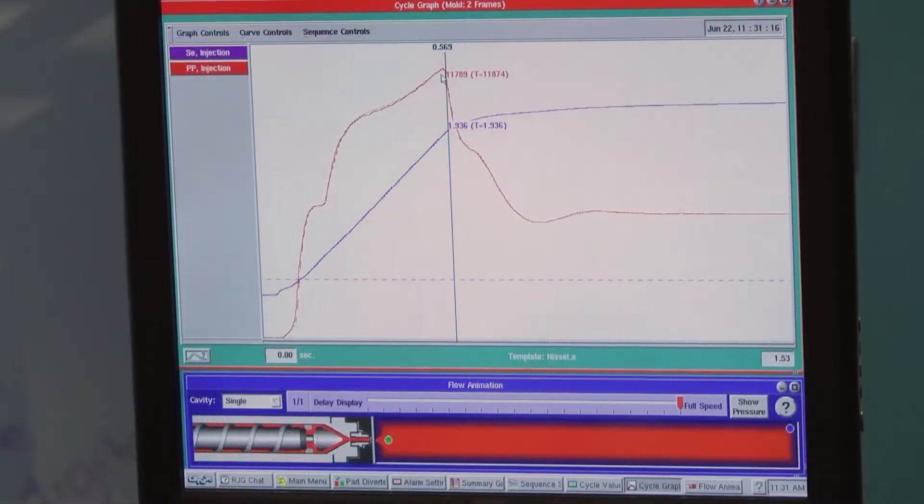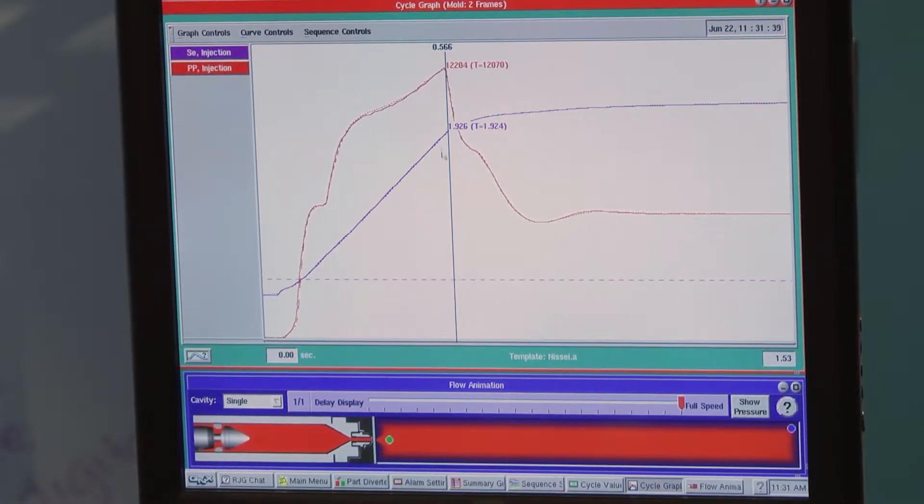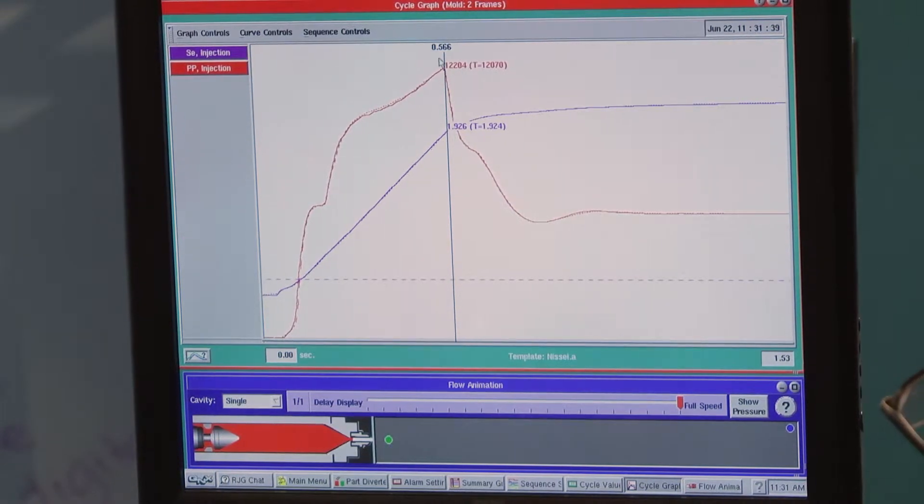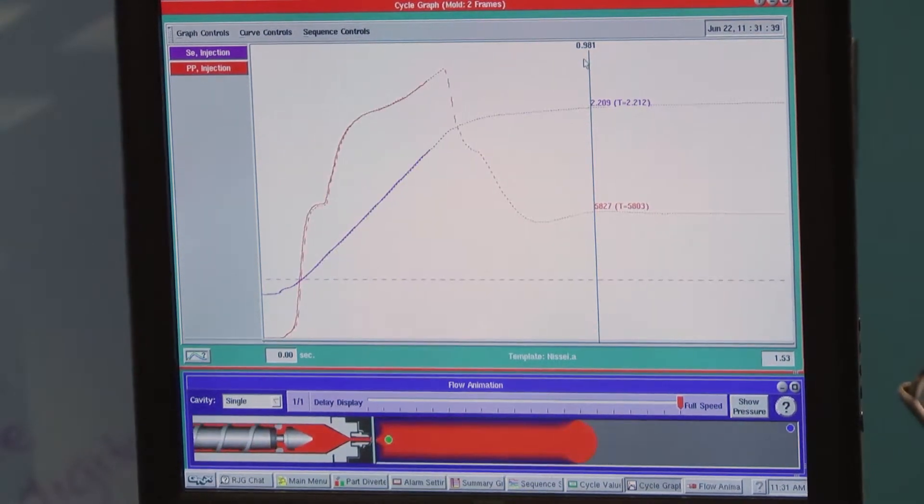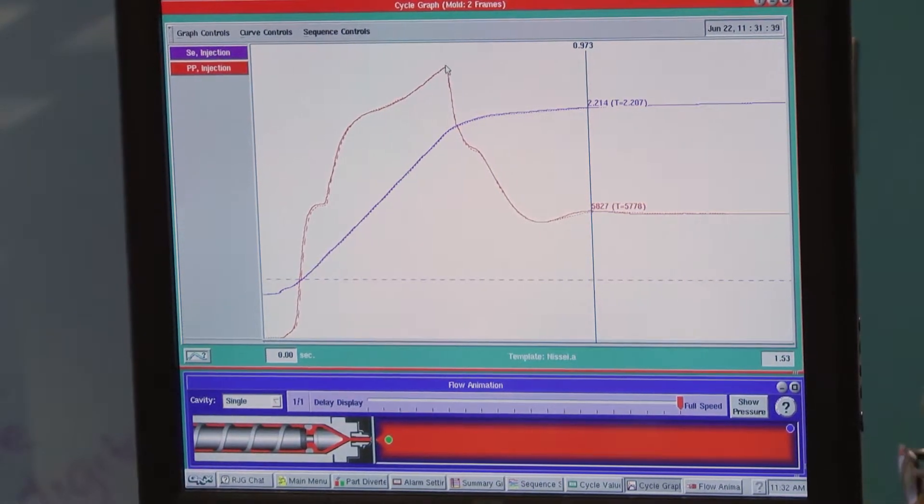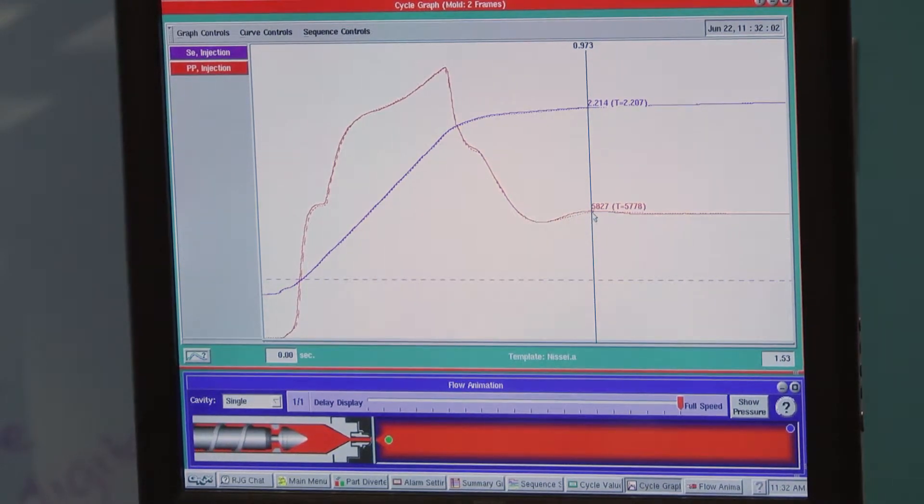The other thing we'll see is that in the injection pressure curve, when we transfer into second stage or hold, we don't immediately reach hold pressure. At this point we're at just a little over a half second and it's almost one second before the hold pressure fully stabilizes here. So we're almost taking half a second for this press to transfer and stabilize.